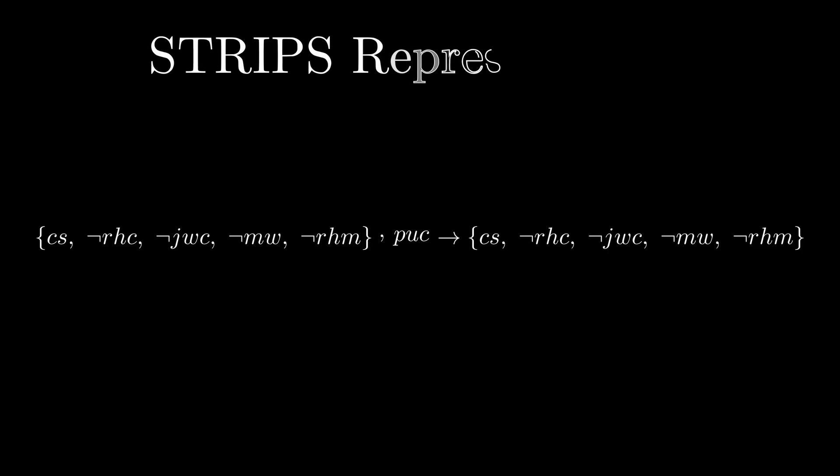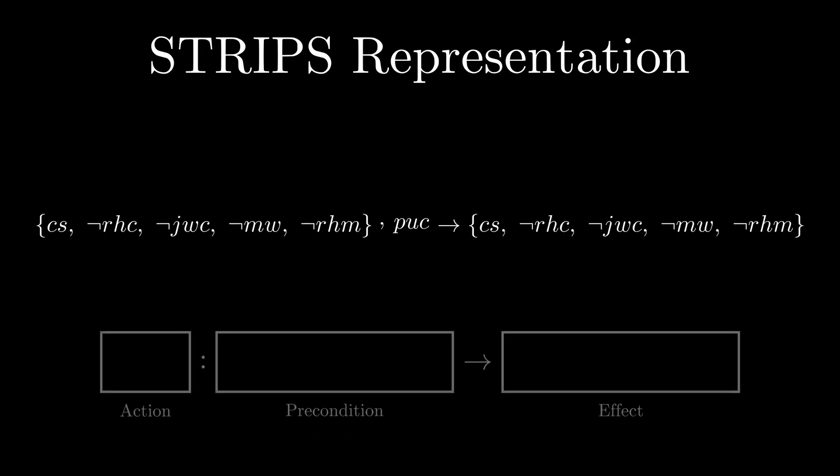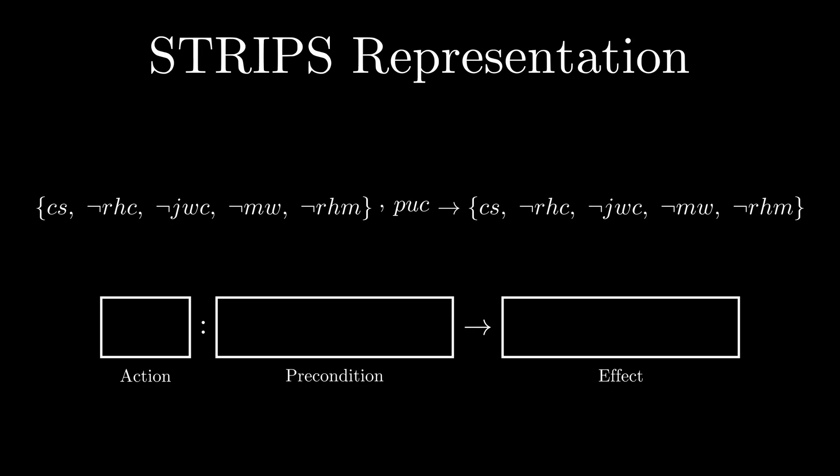Instead, we can use a more action-centric model to check if the relevant features match what the action is expecting, and return the features that changed. An action here can be thought of as a function, where you can pass some features in and get the changed feature values.